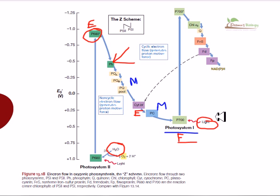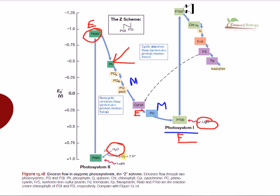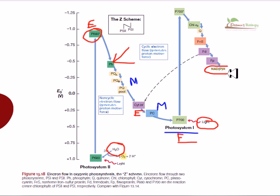Photosystem I takes the electron and gets excited, also requiring light to provide sufficient photon energy to reach the excited state. When P700 reaches its excited state, the electron passes to chlorophyll A0, then to quinone, then to an iron-sulfur cluster, then to ferredoxin, then to flavoprotein, and finally reduces NADP⁺ to NADPH.